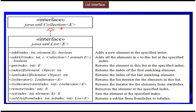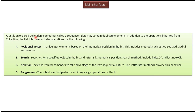List interface extends the Collection interface, so List supports all the methods available in Collection, plus additional methods defined in the List interface. List is an ordered collection that can contain duplicate elements. It supports positional access — based on index position we can add, remove, replace, and get elements. It also supports search (finding a particular object's position), iteration, and range view.